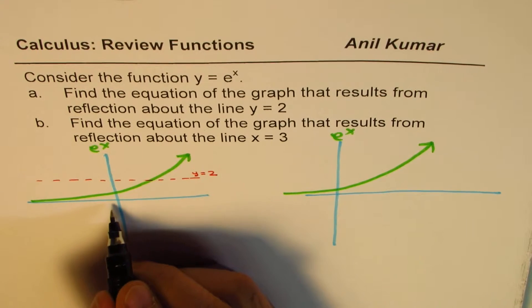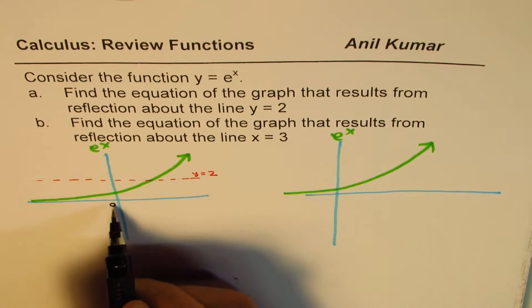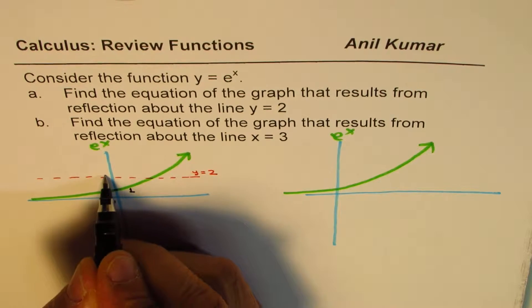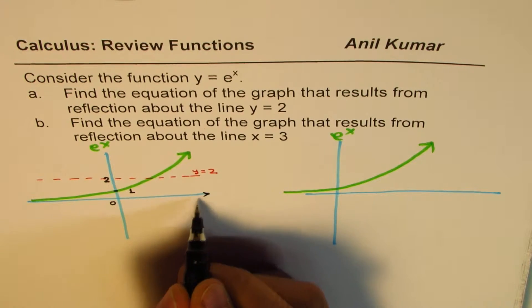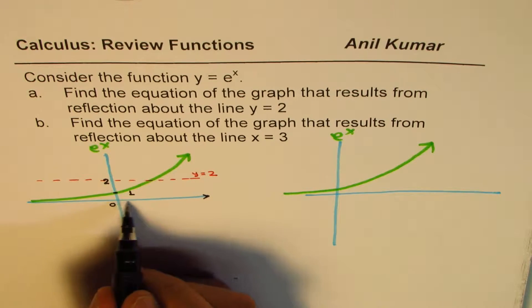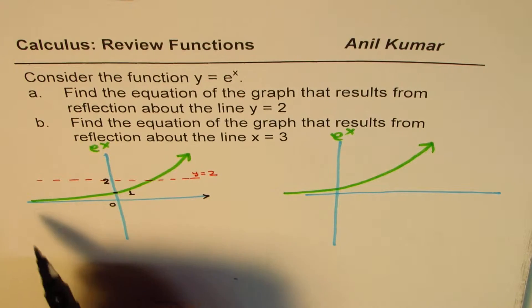It is a very rough sketch, but fairly accurate to understand the concept. Anything to the power of 0 is always 1, so this point we know is 2. And this is x equals to, x is all real numbers, so there's no restriction on domain. y equals 0 is this blue line. That is a horizontal asymptote.